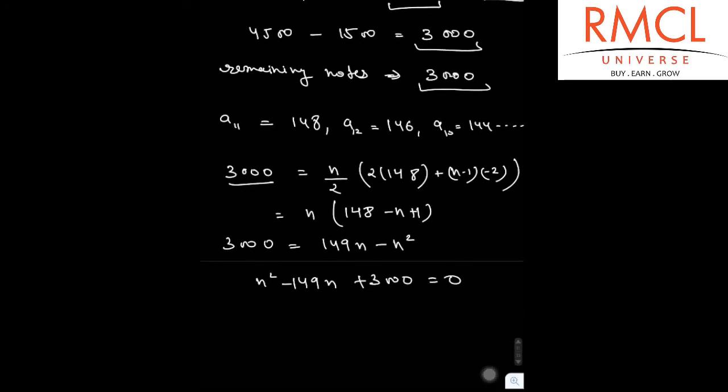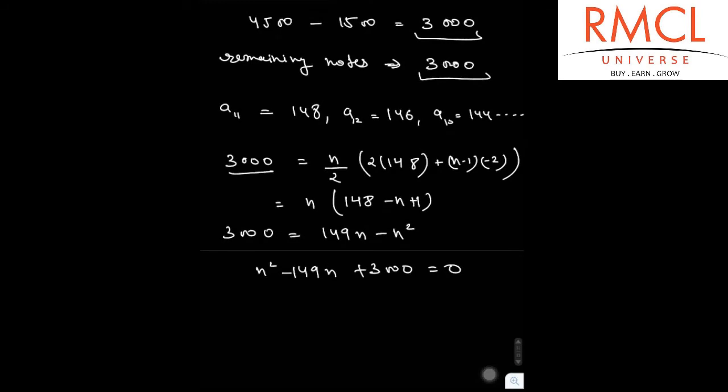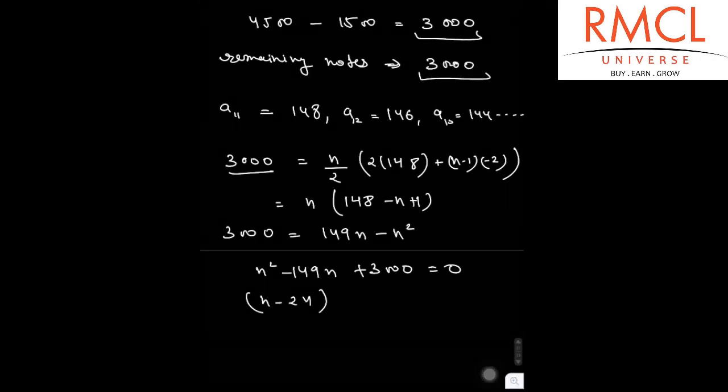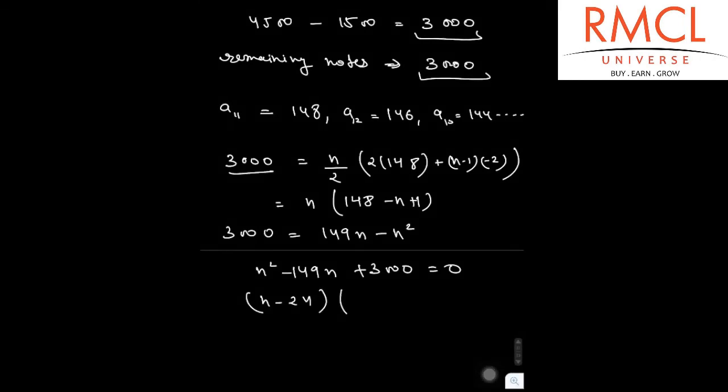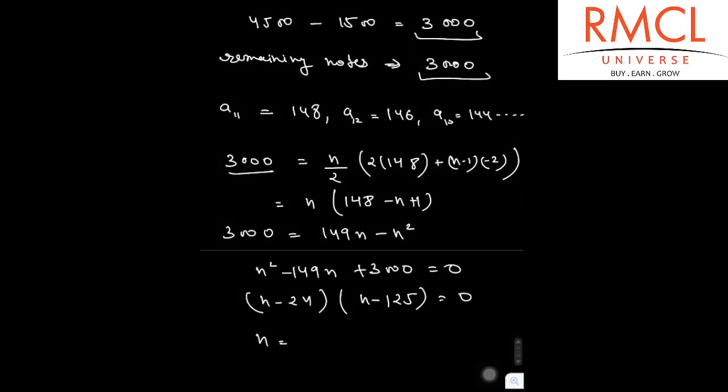So from this we can say that this is N minus 24 multiply by N minus 125, and that is 0. So the value of N is 24 or 125.